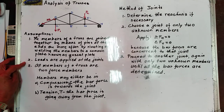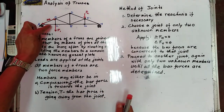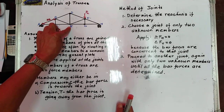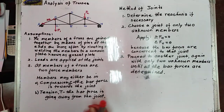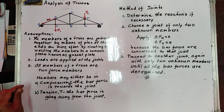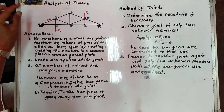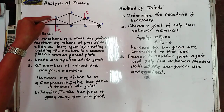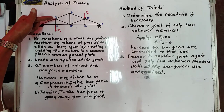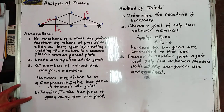Second, loads are applied at the joints only. The loads are applied at the joints of the truss. All members of a truss are two-force members. If member AB is in compression at joint A, then at joint B it should also be in compression. Members may either be in compression or in tension.